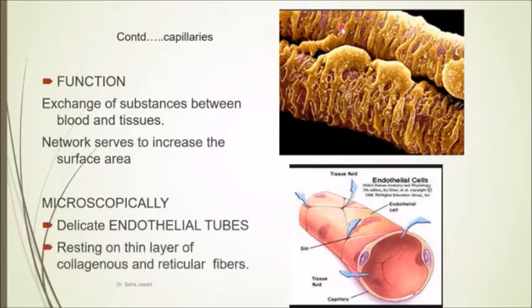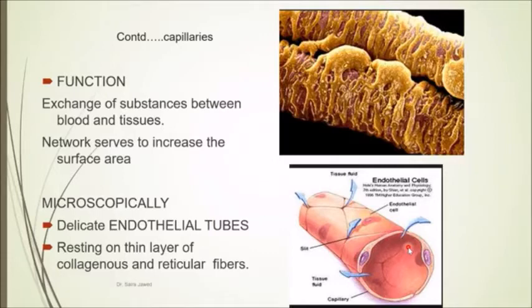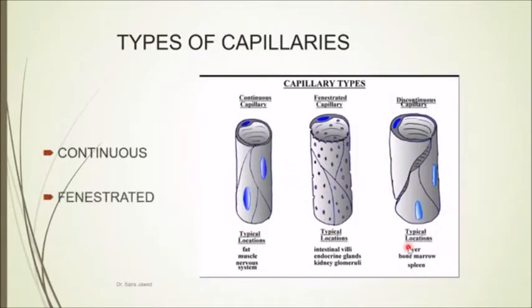Their function is to exchange nutrients as well as waste products. Microscopically, they are very delicate endothelial tubes and they rest on collagenous and elastic fibers. There are certain types of capillaries, and the types differ because they are located at different places where their function slightly varies, leading to adaptation in their structural composition.